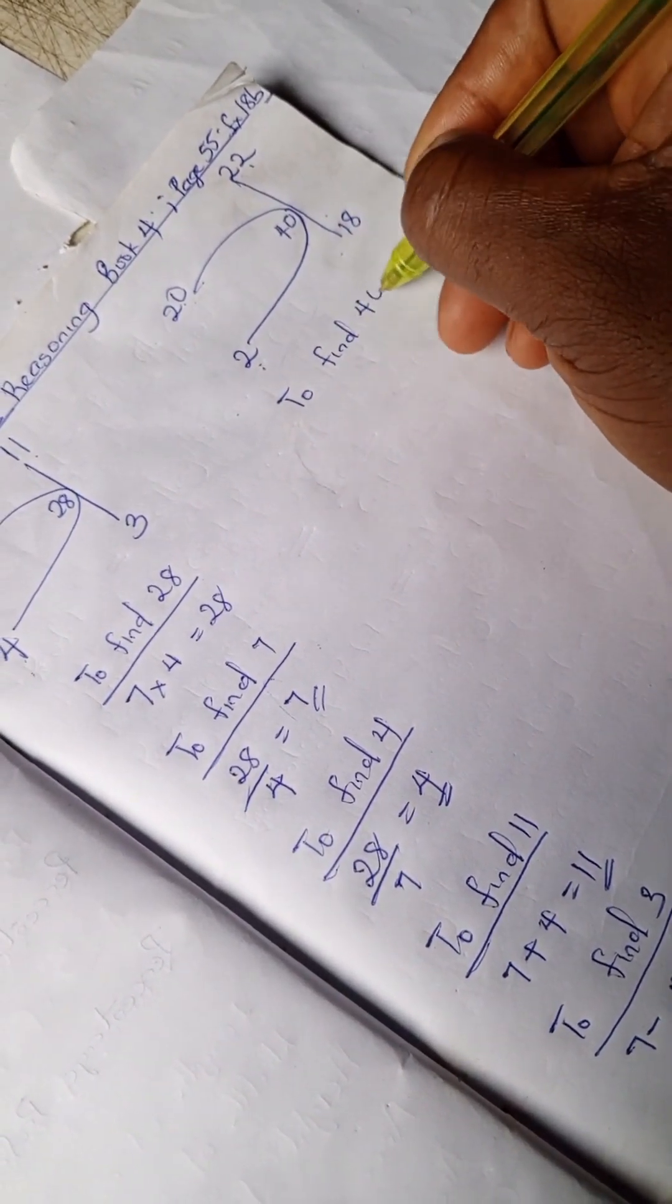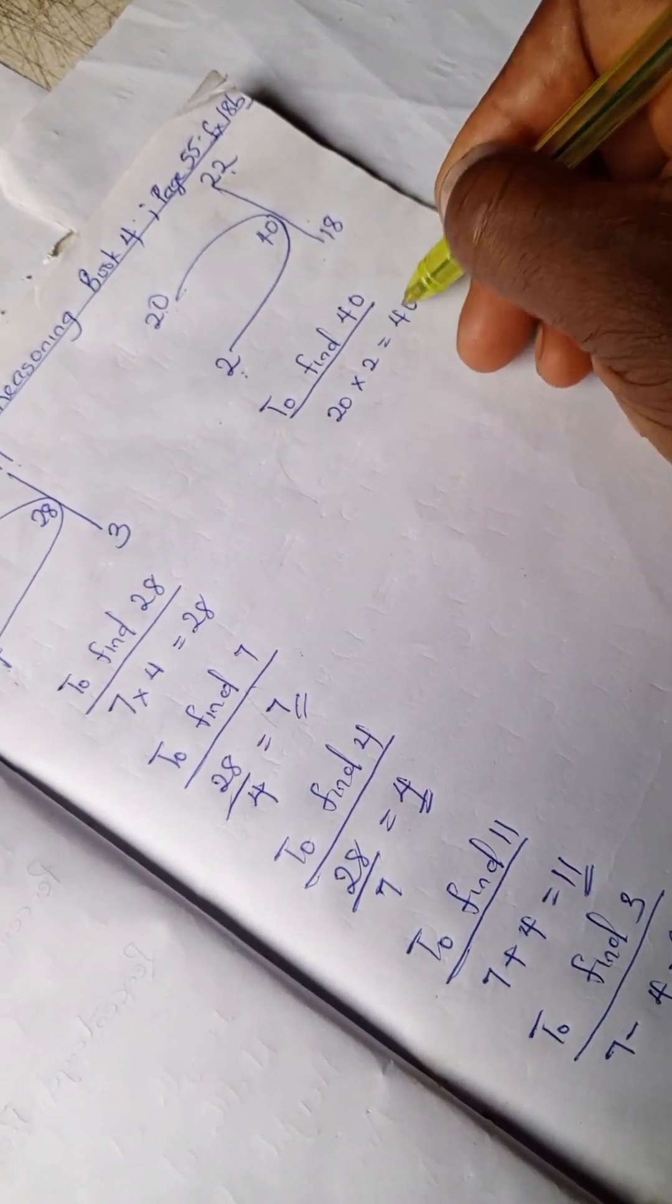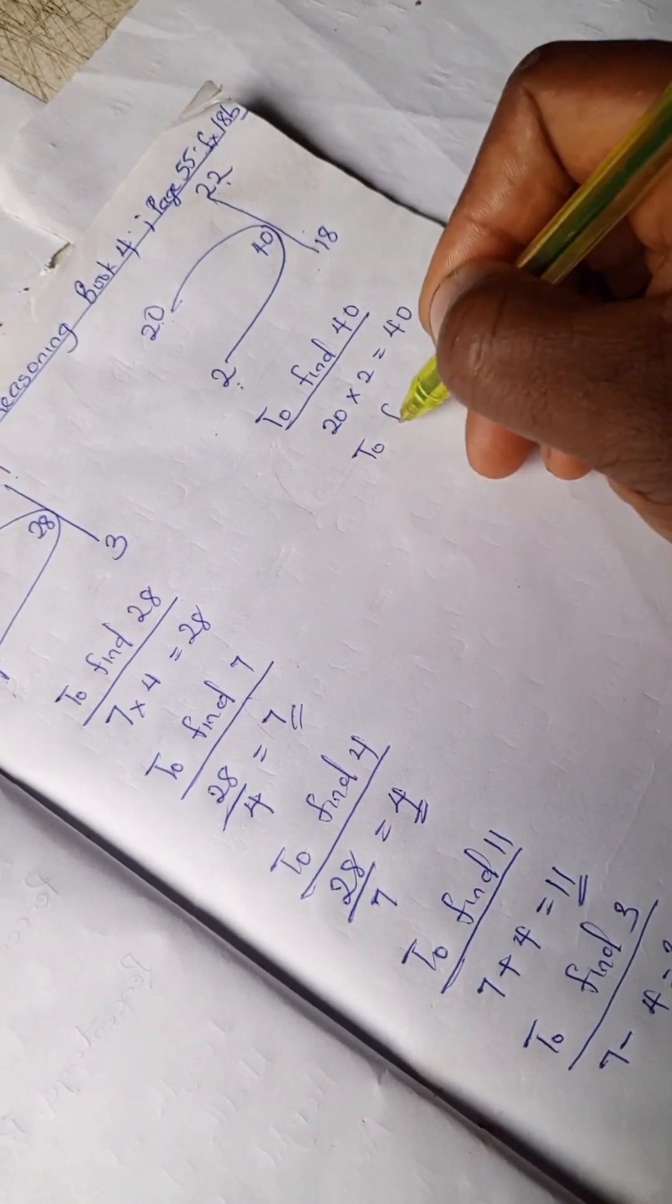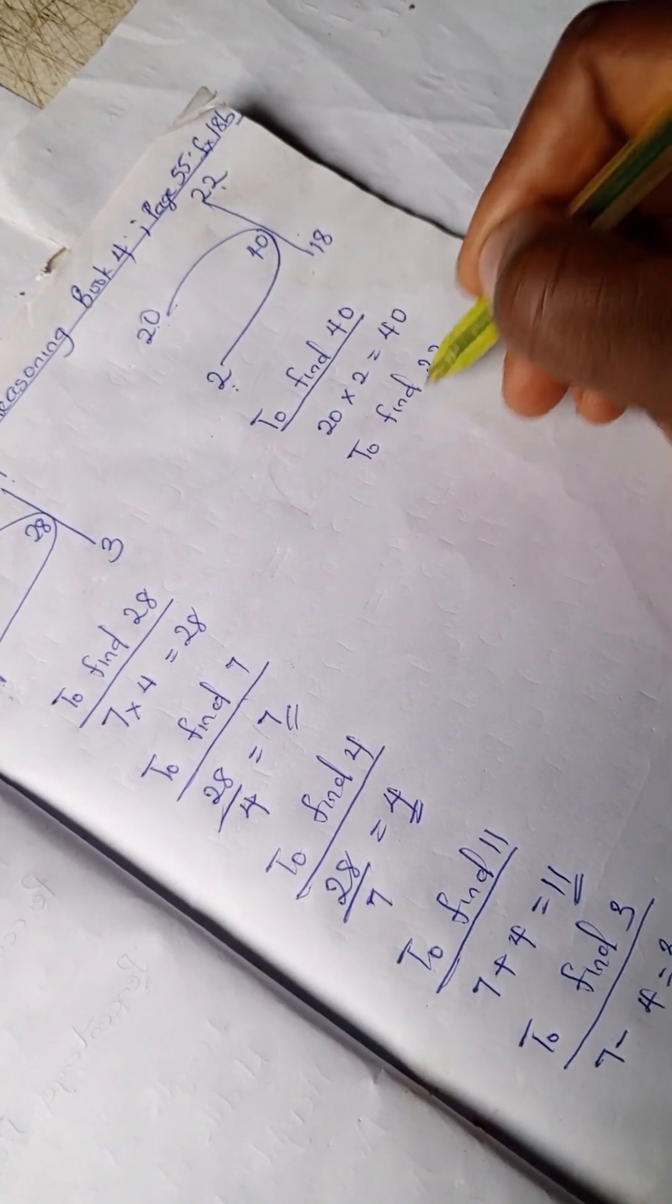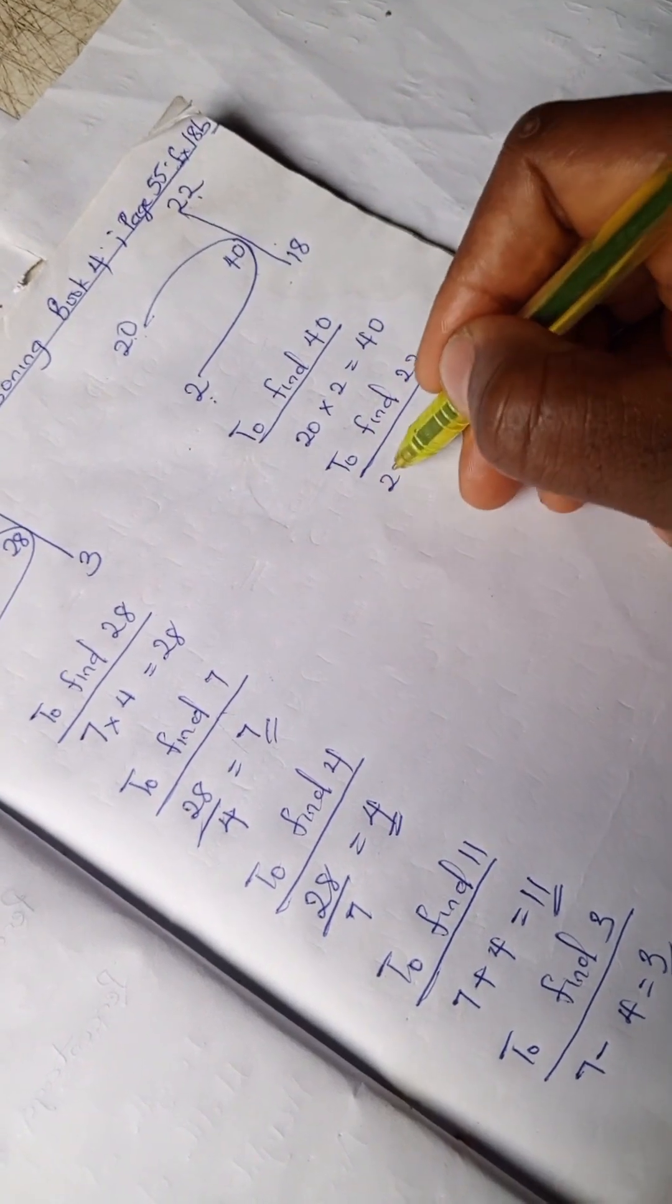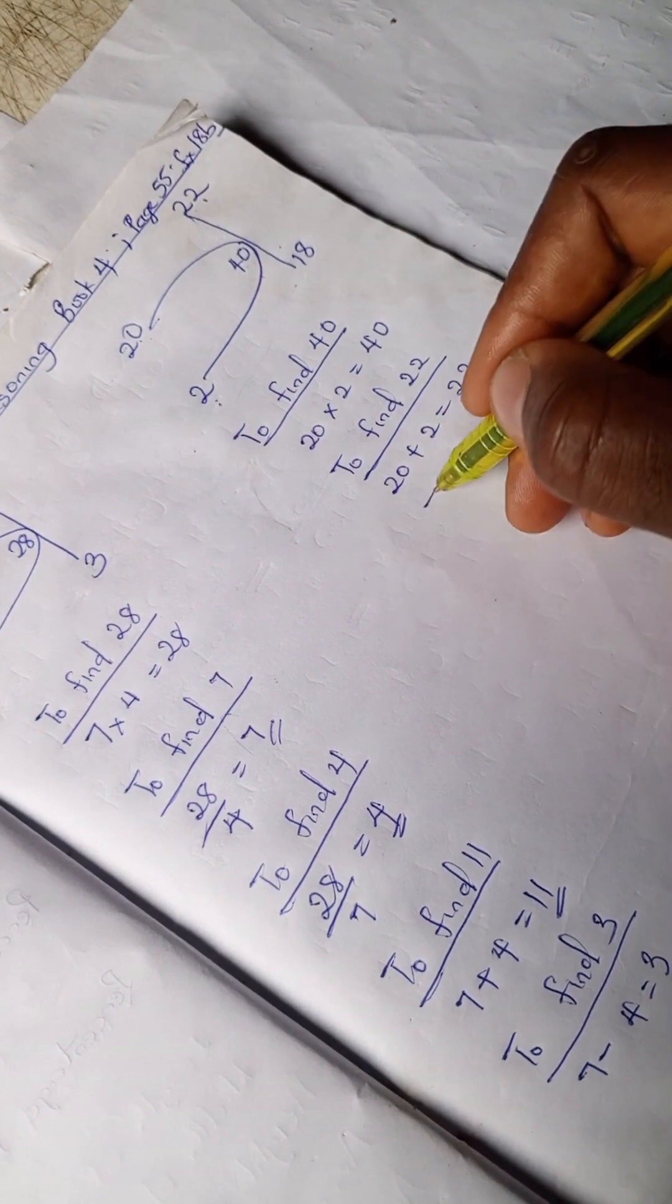To find 40, we have 20 times 2 is 40. And to find, let's find 22 which is up. We have 20 plus 2 is 22.